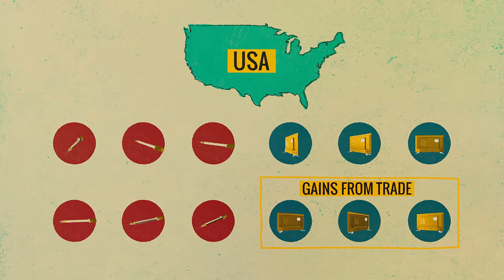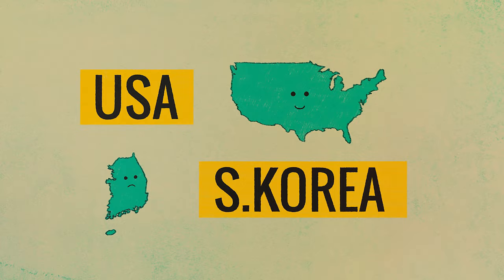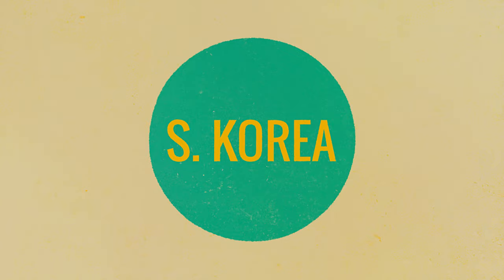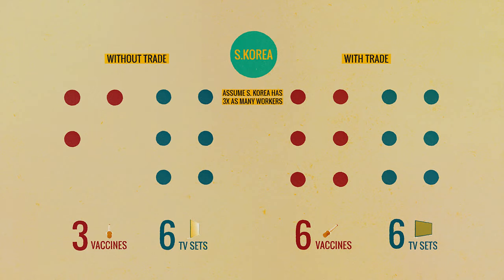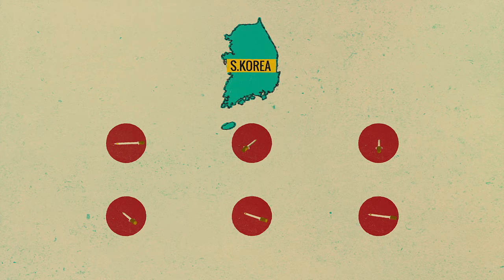You might think that if the U.S. is gaining from trade, then Korea can't be — is Korea being exploited? By no means. Korea can also gain from trade. Suppose Korea increases TV production by six by moving workers out of vaccine production into TV production. It can then take those six TV sets and trade with the U.S. to get six units of vaccine. Korea comes out ahead — it has three more vials of vaccine than it did at the start.